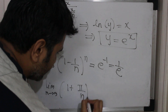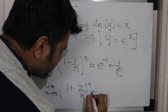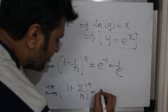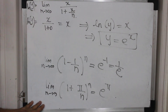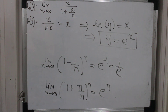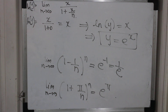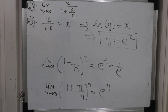Or suppose someone says, what is the limit as n goes to infinity of (1 + π/n) raised to n? By this theorem, x is π, so this is nothing but e raised to π. This is one of the very nice results that you might use very frequently. Thank you.